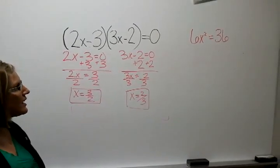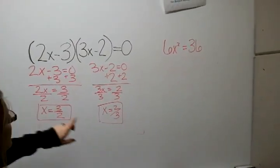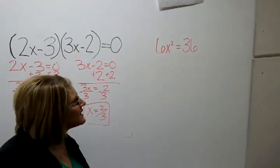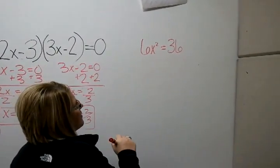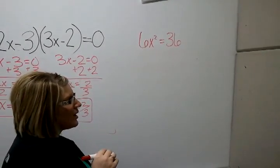Both of these are our answer. Going back to the principle of square root, if this is our problem, 6x squared equals 36, the first thing we want to do is get the x squared by itself.